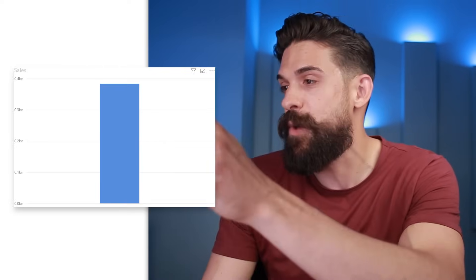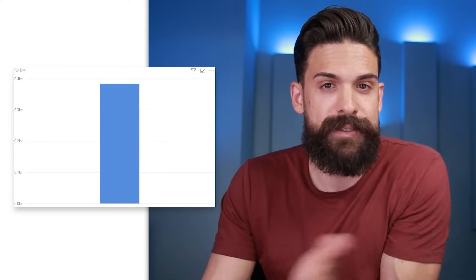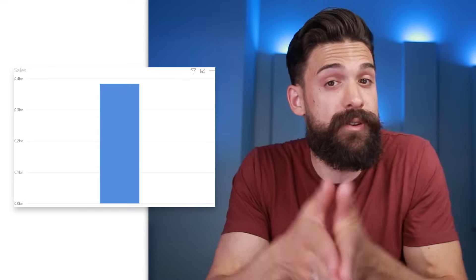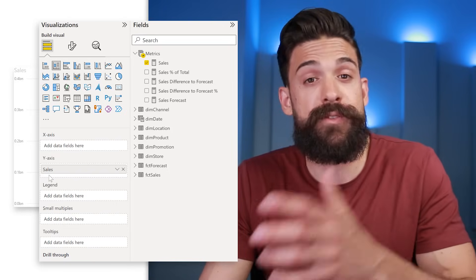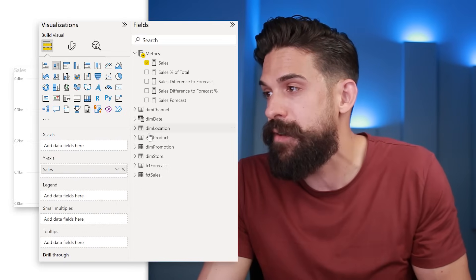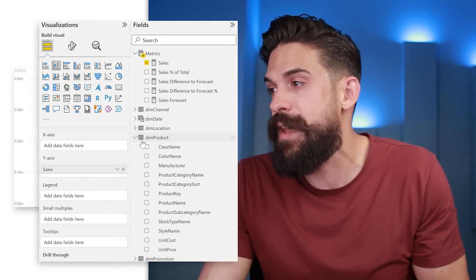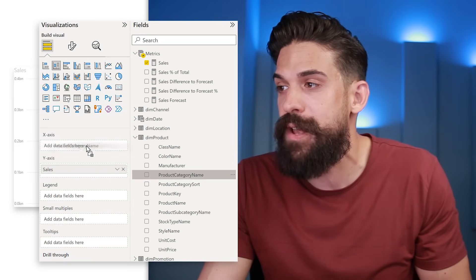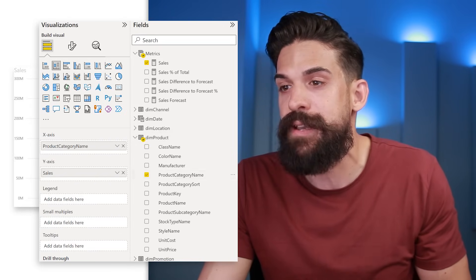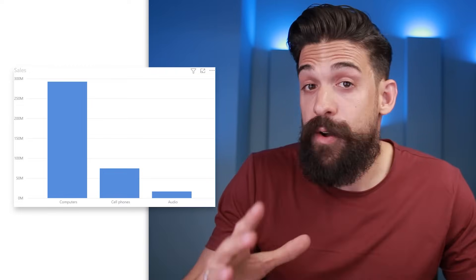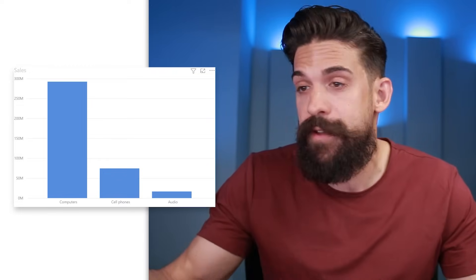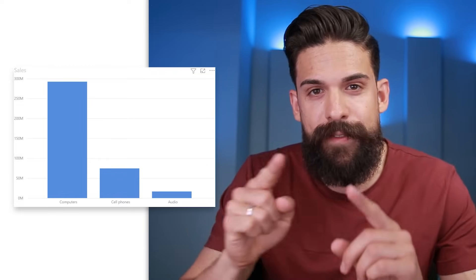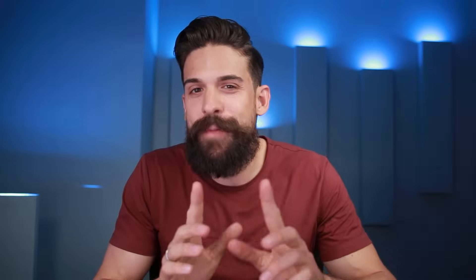For this example I have a simple bar chart where I show the sales on the y-axis, and now I want to create a breakdown. I could go to the table, say dim product, and take the product category name and put that on the axis for a breakdown. But now I want to have the option for the user to switch to a different breakdown, and that's where field parameters come in.